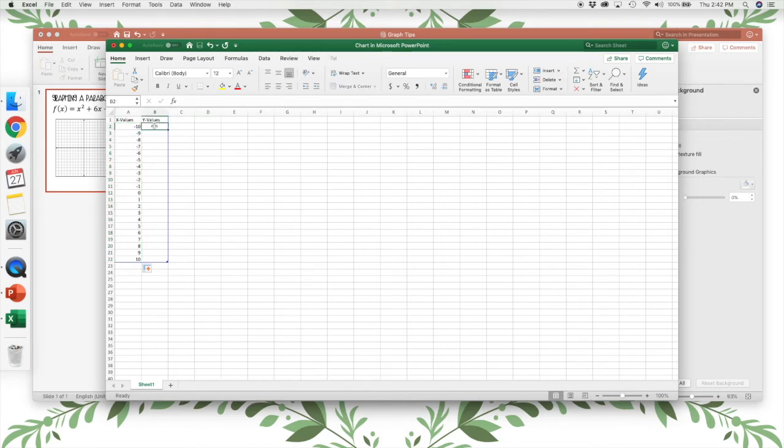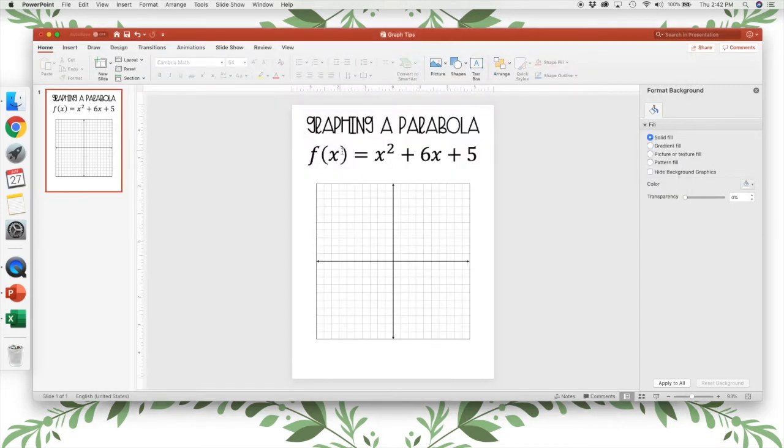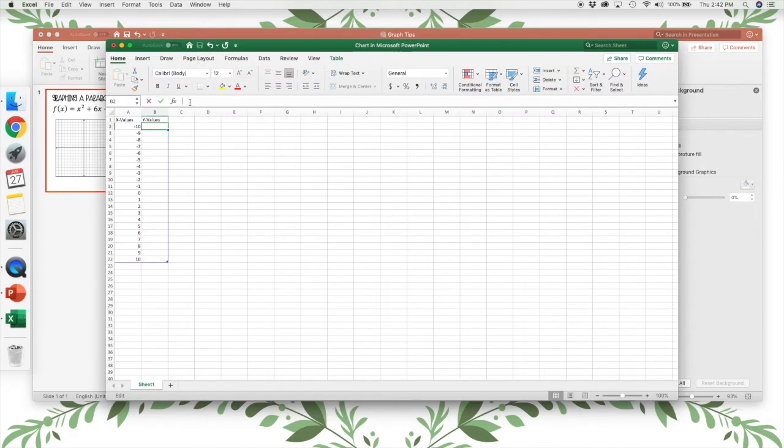Next I'm going to type my function into Excel. So this is the function that I'm graphing, x squared plus 6x plus 5. So to tell Excel that you want to type a function or a formula, you start by clicking here, which is the formula bar, and you type equals.